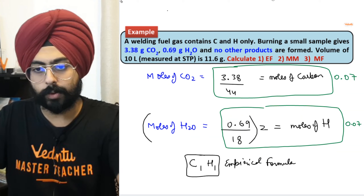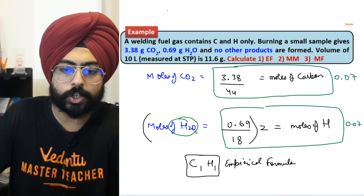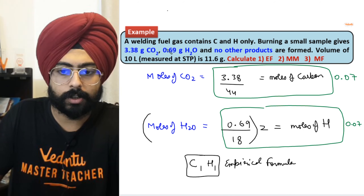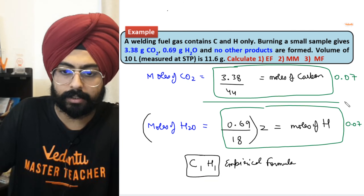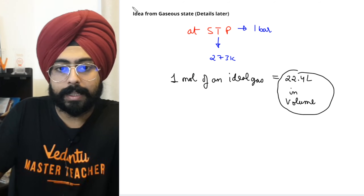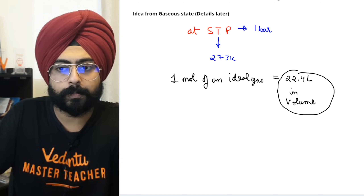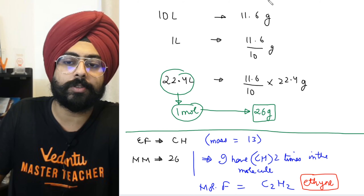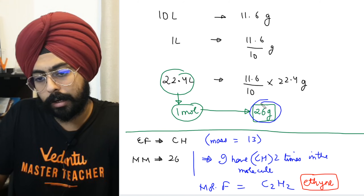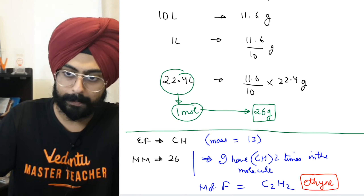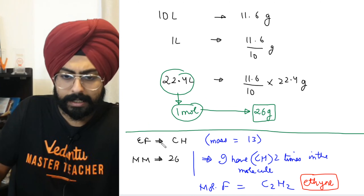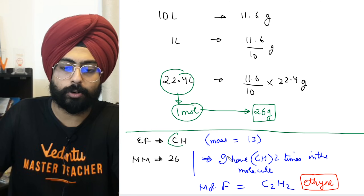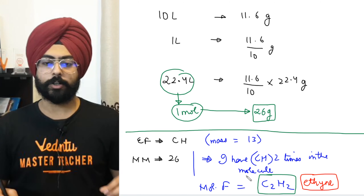Let's revisit: moles of CO2 give you moles of carbon; moles of H2O multiplied by 2 give you moles of hydrogen. The ratio of these moles gives empirical formula C1H1. From gaseous state: 1 mole of gas = 22.4 liters. 10 liters = 11.6 grams, so 22.4 liters = 26 grams. Empirical mass is 13, molecular mass is 26, so multiply by 2 — molecular formula is C2H2.